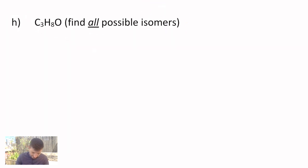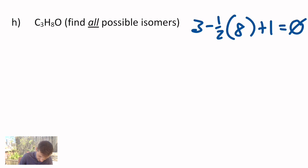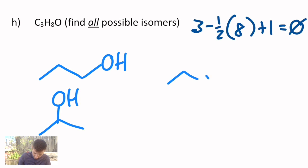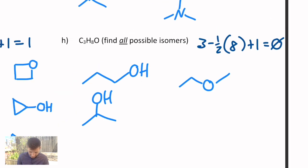And lastly, they don't give us how many that exist. They just want all the possibilities for C3H8O. Let's see. We have three minus one-half of eight. No halogens and no nitrogens. And then plus one. You get zero. So not too bad because there's no unsaturations to worry about. Three carbons. And then an oxygen. So I could have propanol. I could have 2-propanol. You could have ethylmethyl ether. And that's actually it. There's only three possibilities for that structure.